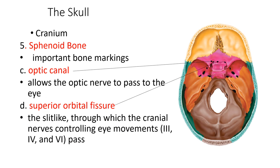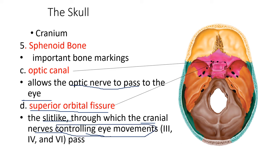We also have the optic canal, which allows the optic nerve to pass through for visual interpretation. And we have the superior orbital fissures — a slit-like opening through which the cranial nerves controlling eye movement pass. The extrinsic muscles of the eye are controlled by cranial nerves 3, 4, and 6.